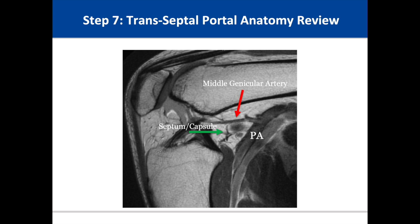When compared to an MRI with the knee extended, the flexion position creates the greatest distance between the posterior septum and the popliteal and genicular arteries. It is important to note that a flexion MRI is not necessary for preoperative planning, but is used in this report for an anatomical review.